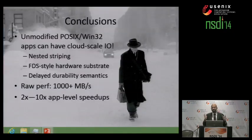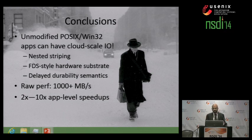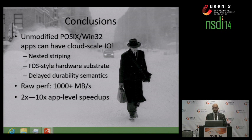In conclusion, I've described how you can take unmodified POSIX and Win32 applications and run them in the cloud on the same hardware that runs traditional big data workloads, and provide those applications with cloud-scale IO performance. I described three techniques that unlock this cloud-scale performance: nested striping, an FDS-style locality-oblivious hardware store, and delayed durability semantics. Working together, these techniques allow the Blizzard virtual drive to provide over 1,000 megabytes per second of raw throughput, and compared to a local physical disk or EBS drive, a 2x to 10x performance improvement. Thank you.